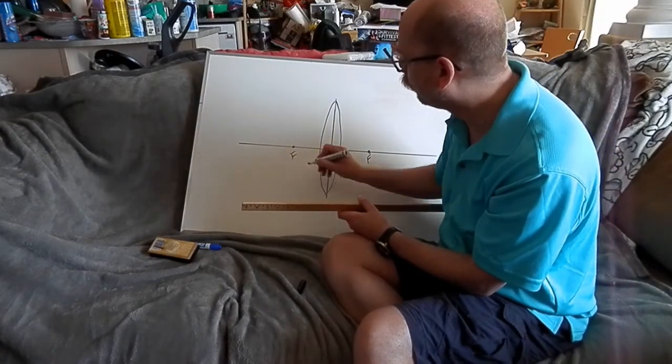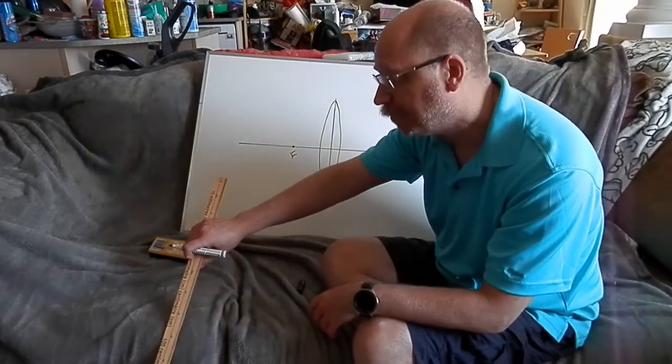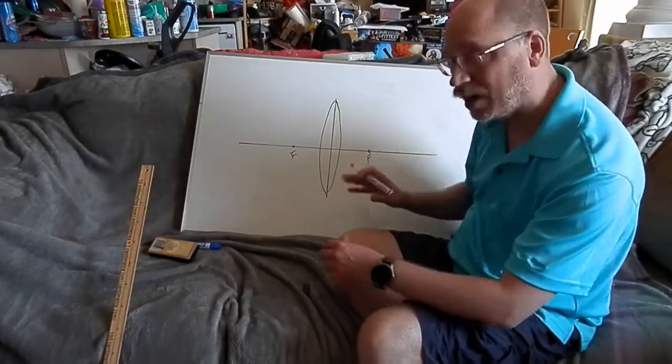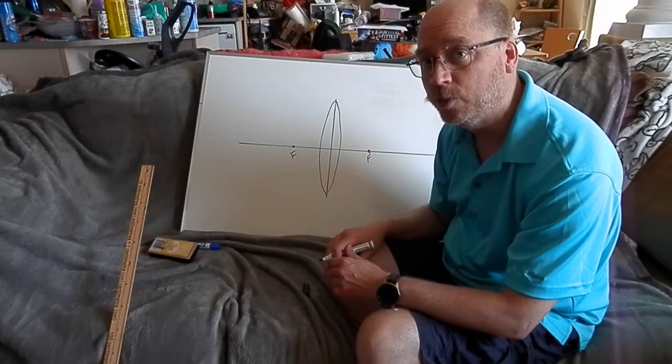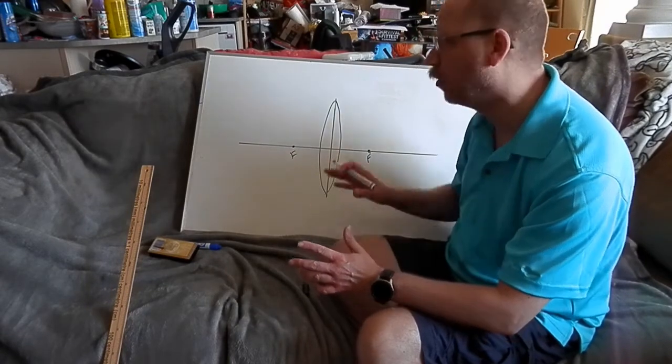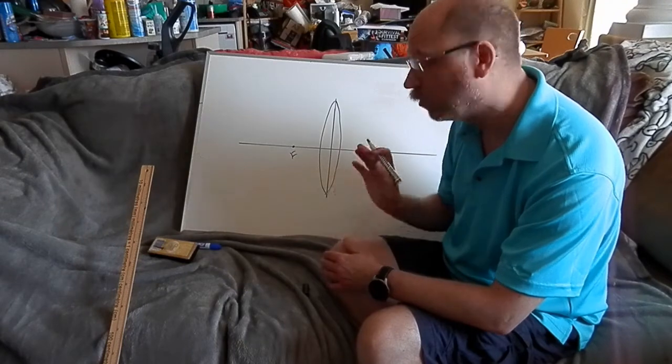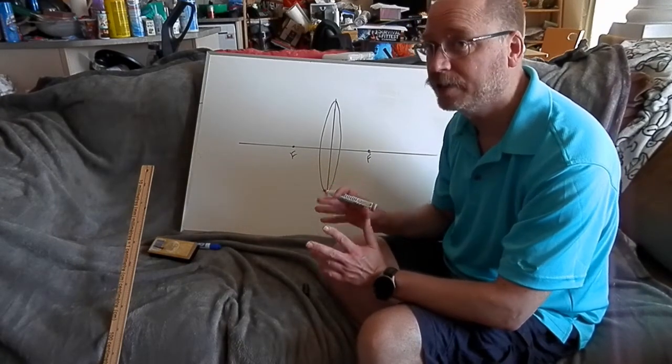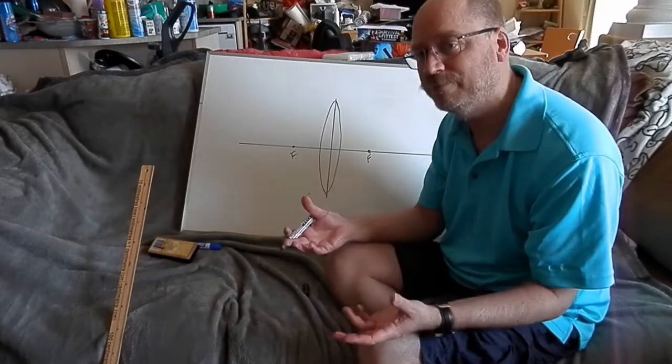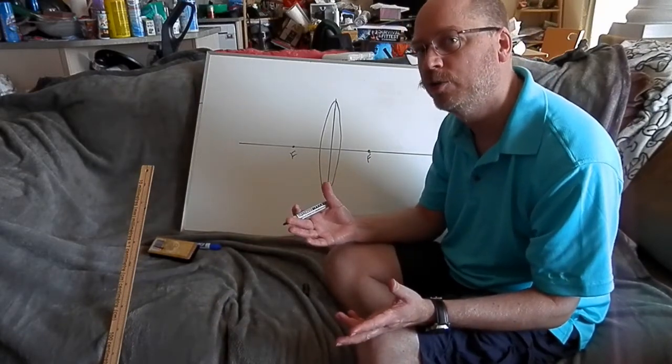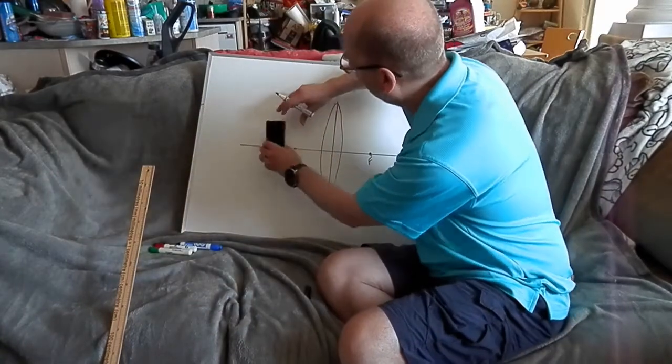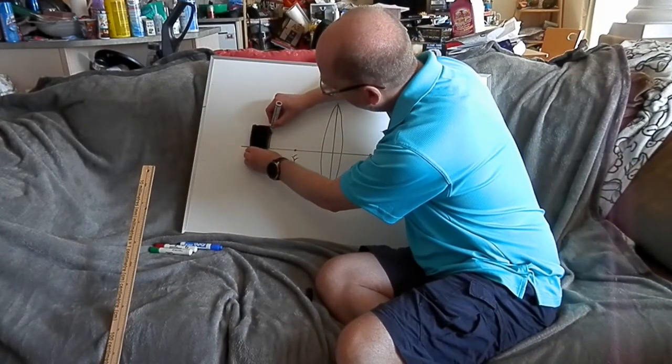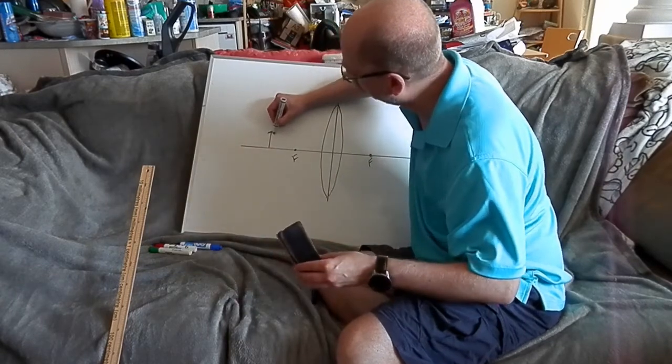But we do put a focal point on both sides because with a lens, there's nothing special about one side compared to the other. So we can't say, oh, I can only have a focal point on one side. Now as soon as I do put in the location of the object, that does kind of set how we're going to do other things in the diagram. So in my diagram here, I'm just going to use this to draw the object. I'm going to draw my object here.